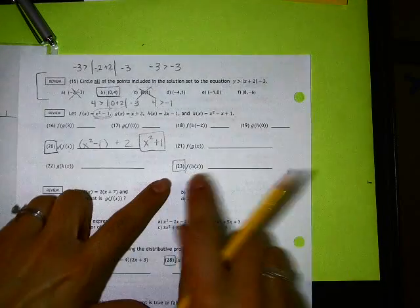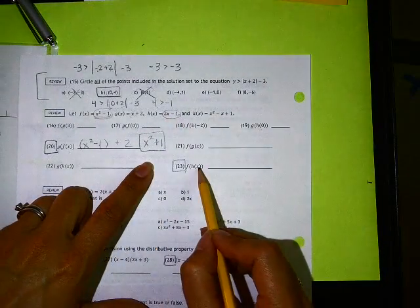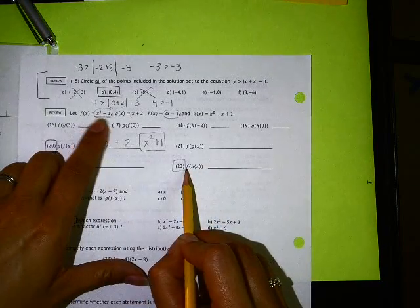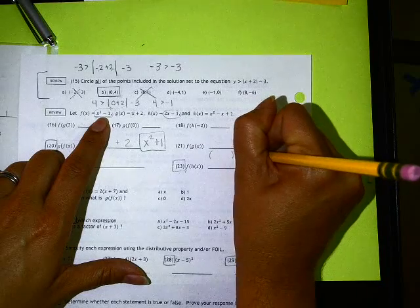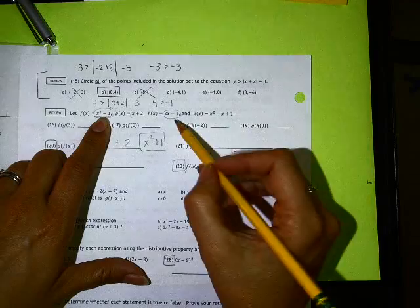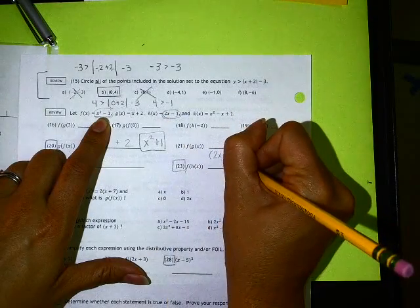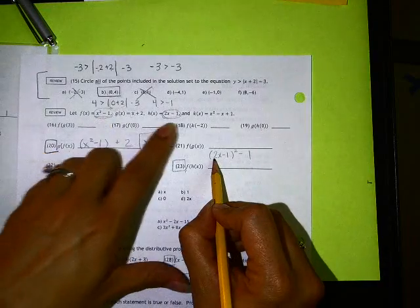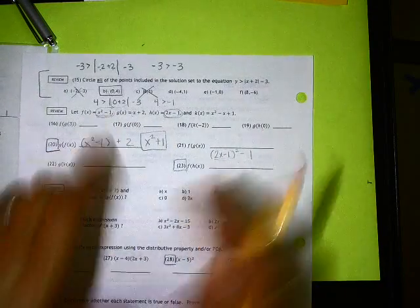This one is a little bit trickier. So for this one here, this is my h of x function, and I'm supposed to put that into my f of x function. So I'm going to create a space for my normal x in my f of x function. Does everybody see that? And then what I'm going to do is I'm going to put this guy right in there. So again, this is my h of x function that I put inside of the x position.